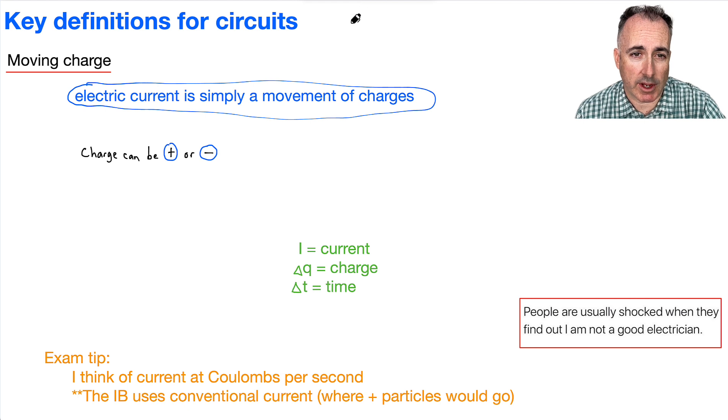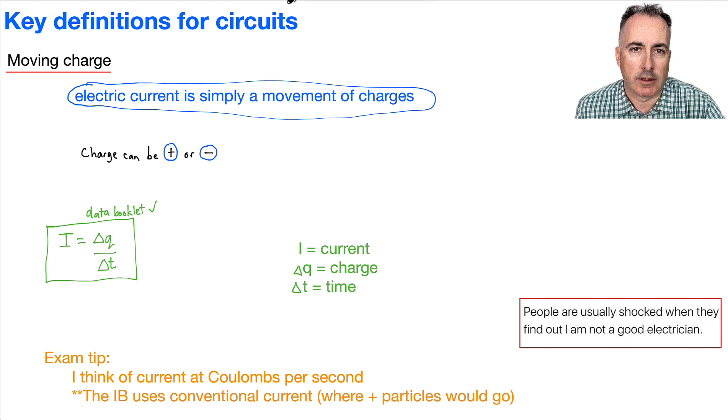When we actually are considering an equation for the current, we've got one from the data booklet. I equals delta Q divided by delta T. That's all you need. So let's maybe start defining some of these variables here. Capital I is the current, and it's measured in amperes, or amps. Delta Q, that's charge, measured in Coulombs. And we've got change in time, that's measured in seconds.